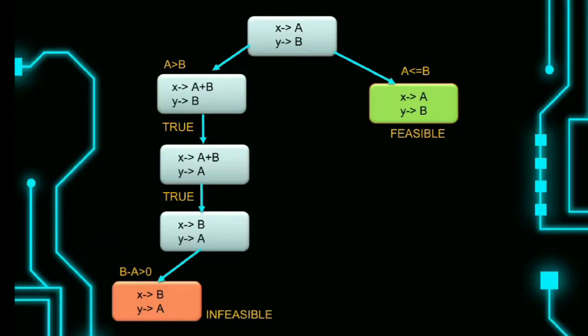Next, our first condition is x is greater than y. That is, A is greater than B. If A is greater than B, our first expression is x equals x plus y. That is, A plus B. At that time, y is B itself.